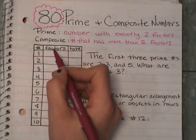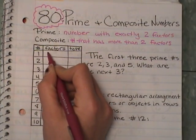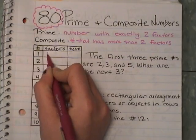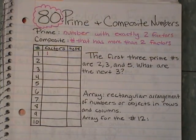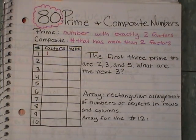The first one is 1, and it's neither prime nor composite, because it's just 1. So we're going to actually skip that one and go to number 2.